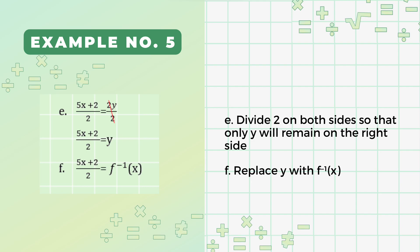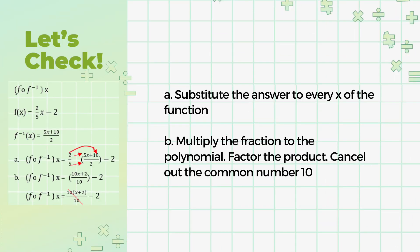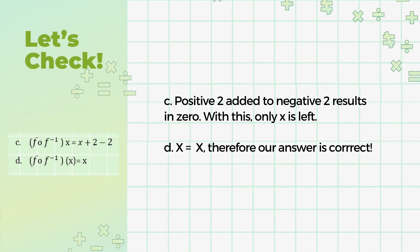Do you think our answer is correct? Let's find out! Substitute the answer to every x of the function. Multiply (2 over 5) by (5x plus 10) over 2. The product is (10x plus 20) over 10. We can still reduce this by factoring 10x plus 20 — take out the common factor 10 and divide it to both terms, giving us 10 times (x plus 2). Next, we'll cancel out 10, leaving us with x plus 2 minus 2. Positive 2 added to negative 2 results in 0, so only x is left. Since x is the final answer, we can confirm that our inverse is correct.